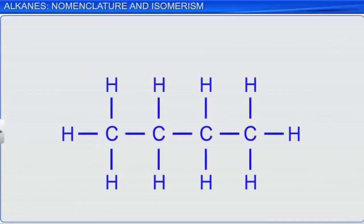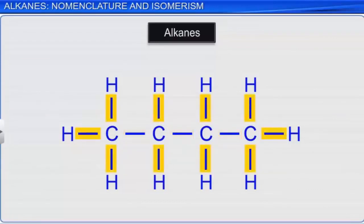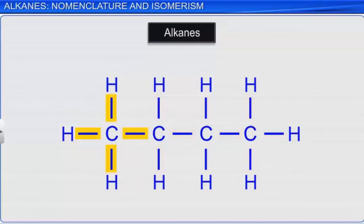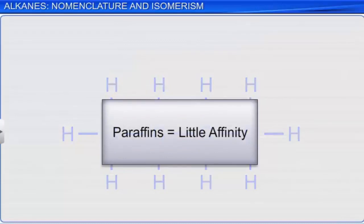Alkanes are the simplest form of hydrocarbons containing carbon-carbon single bonds. Their molecules consist of carbon-hydrogen bonds and carbon-carbon single bonds. Since each carbon is bonded to four other atoms through single covalent bonds, the compounds are called saturated compounds. They contain carbon-carbon single covalent bonds, which are strong sigma bonds. Due to this, the compounds are almost chemically non-reactive at normal temperature and pressure. This is why they were earlier known as paraffin, which, in Latin, means little affinity.